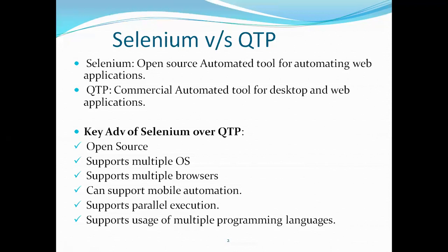This is where automation testing comes into the picture. It allows the tester to carry out regression testing with full trust in the results, without worrying about manual effort. In the market today, there are different kinds of tools available for automating browsers, Windows-based applications, desktop applications, and other application types.